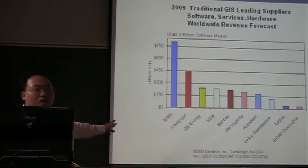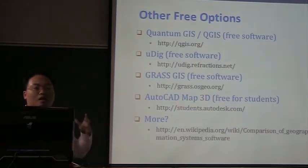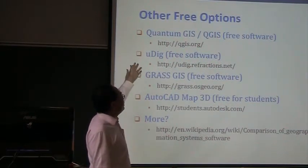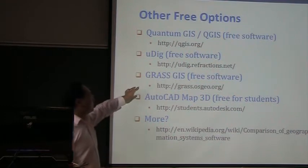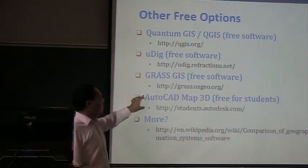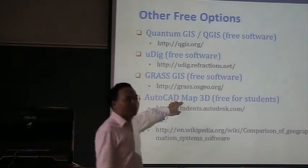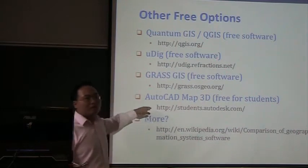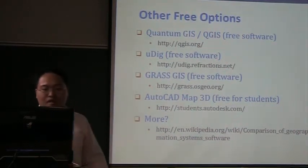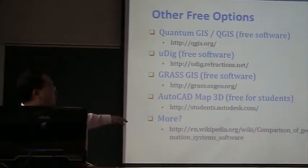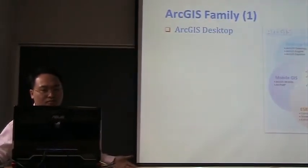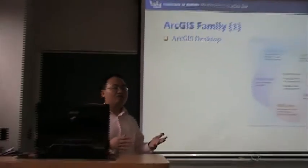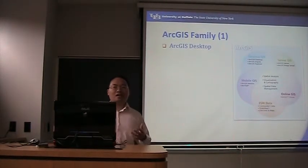These are commercial options. You also have some free options — actually, you have a lot of them. You can have QGIS, UDIG, and all these open-source GIS tools. As a student, you get AutoCAD and all Autodesk software for free. Access their website if you need any Autodesk software. If you need more, just go to the wiki link. But since UB has a GIS license server which provides 500 floating licenses, we finally decided to use ArcGIS.